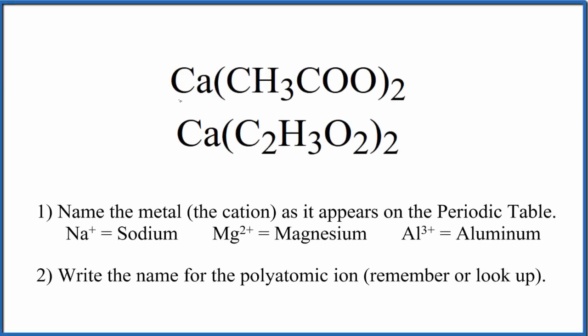In this video we're going to write the name for Ca(CH3COO)2. You can also write this as Ca(C2H3O2)2. This is the acetate ion, just two different ways to write it. So let's use this first one up here in this video.